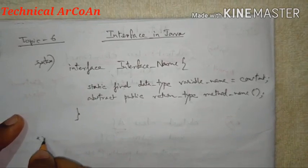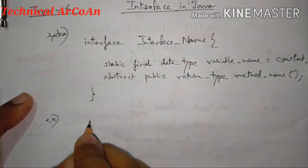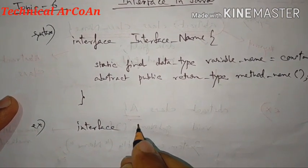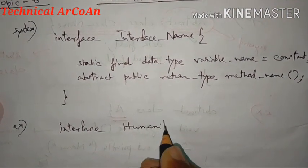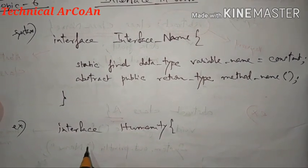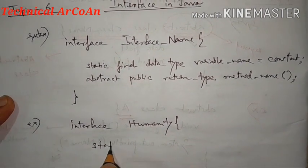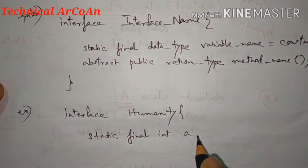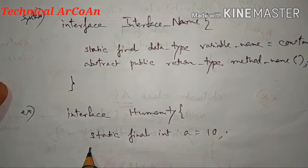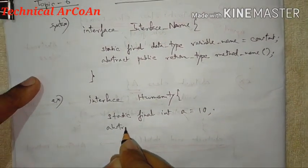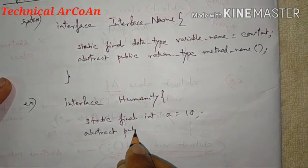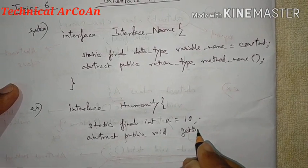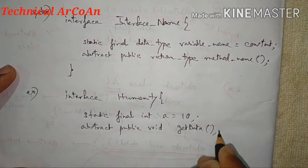Now let's go through an example. We take the interface name as 'Humanity'. We declare a constant: static final int a = 10. And we declare an abstract method: abstract public void getData, with no body.